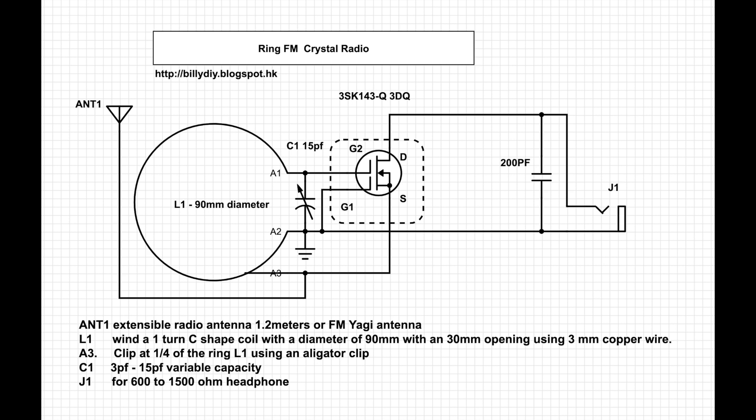You can build this radio using either the MOSFET J310. This is the diagram. It's the same as all other FM crystal radios I built, except that the coil, instead of multiple turns, we only have a single turn coil made of three millimeter copper wire. And the diameter of that C-shaped coil is 90 millimeters or 3.5 inches. There's an opening of around 90 millimeters at one end.